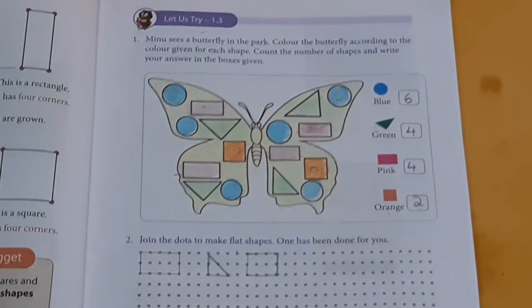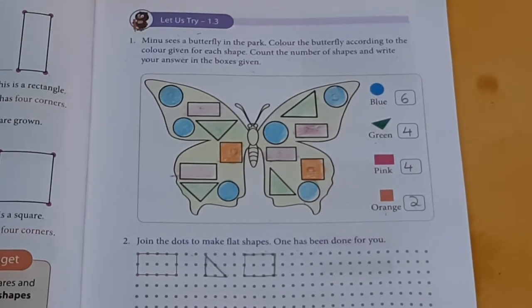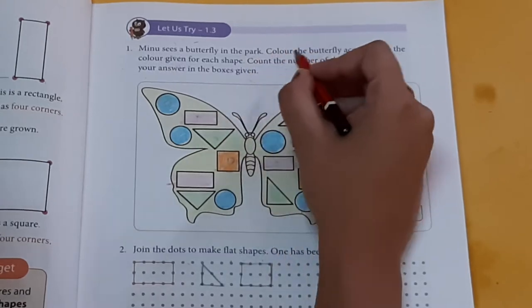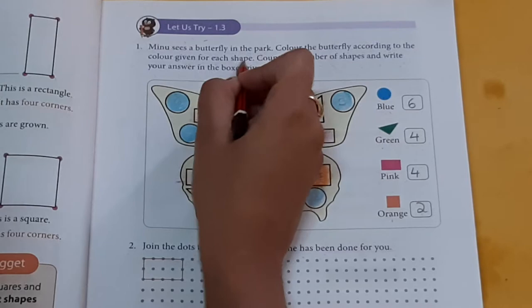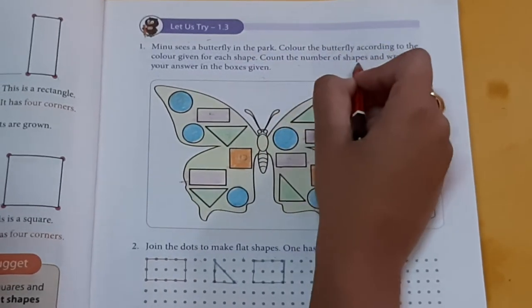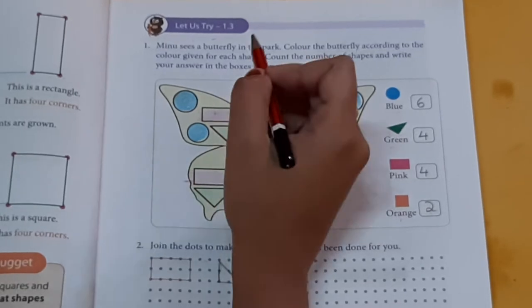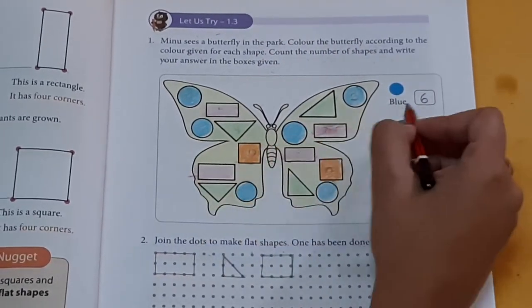Now, let us try 1.3. First question. Minoo sees a butterfly in the park. Color the butterfly according to the color given for each shape. Count the number of shapes and write your answer in the box given. We have already colored it now. Let us count the number of shapes.